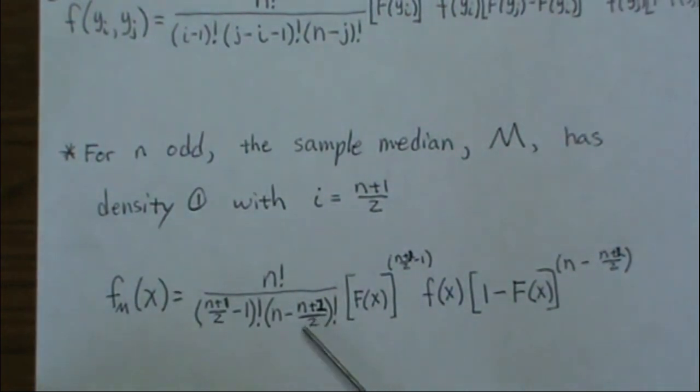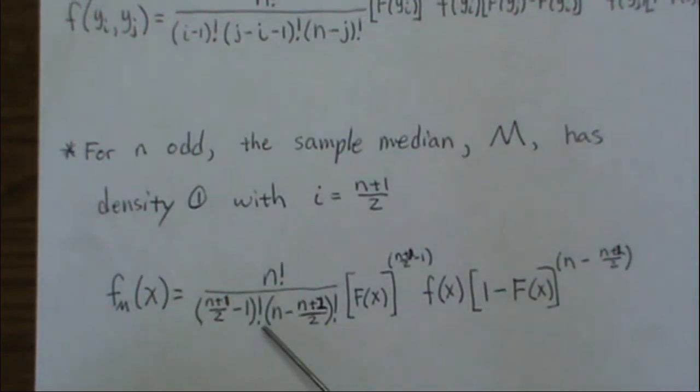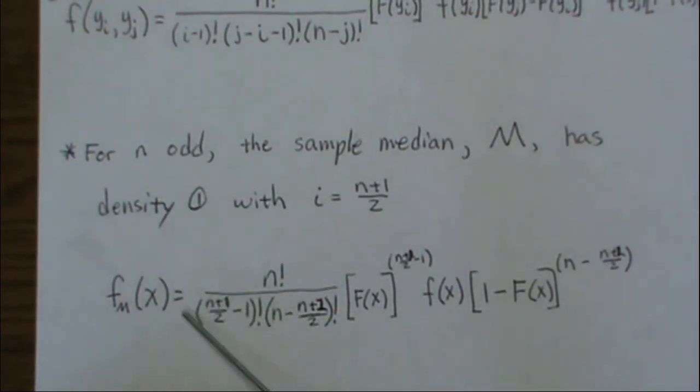Now some will write this quantity as, since this is the same as this, it's the middle value, so this is half, and this is half, they'll just square this first quantity. But I wrote it out just to be consistent with what I wrote before.